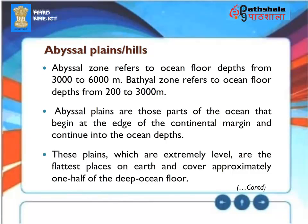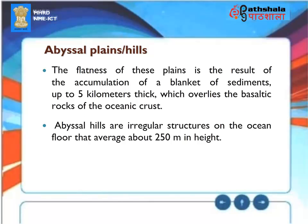Abyssal Plains and Hills: The Abyssal Zone refers to ocean floor depths from 3,000 to 6,000 meters; the Bathyal Zone refers to depths from 200 to 3,000 meters. Abyssal Plains are parts of the ocean that begin at the edge of the continental margin and extend into ocean depths. These extremely level plains are the flattest places on Earth, covering approximately one half of the deep ocean floor. Their flatness results from accumulation of sediments up to 5 kilometers thick overlying basaltic rocks of the oceanic crust. Abyssal hills are irregular structures averaging about 250 meters in height.